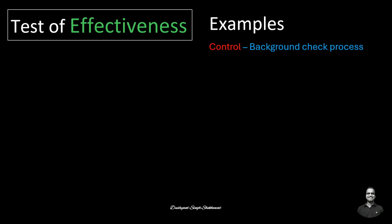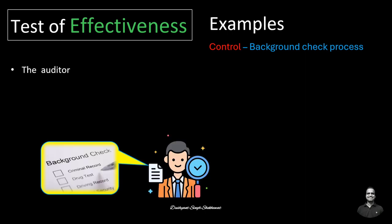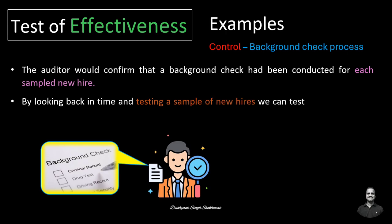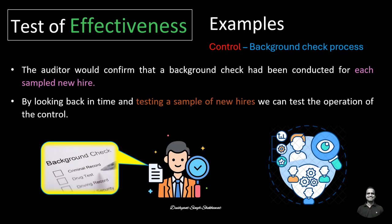Taking another example, to test the operating effectiveness of the background check control, the auditor would confirm that a background check had been conducted for each sampled new hire. By looking back and testing a sample of new hires from the last 12 months, we can test the operation of the control. This sample testing method can identify whether the control operated effectively and consistently over that period of time.